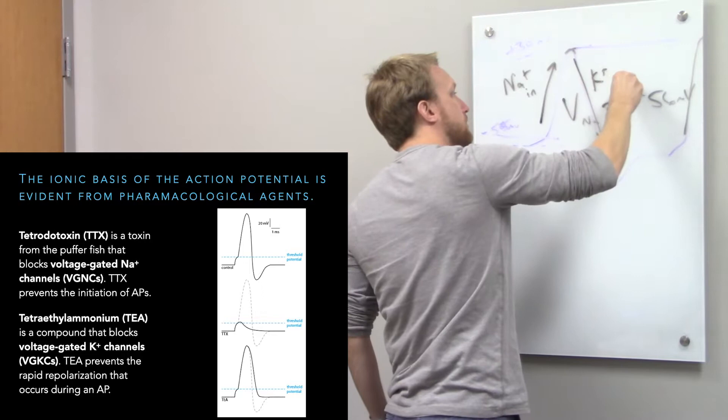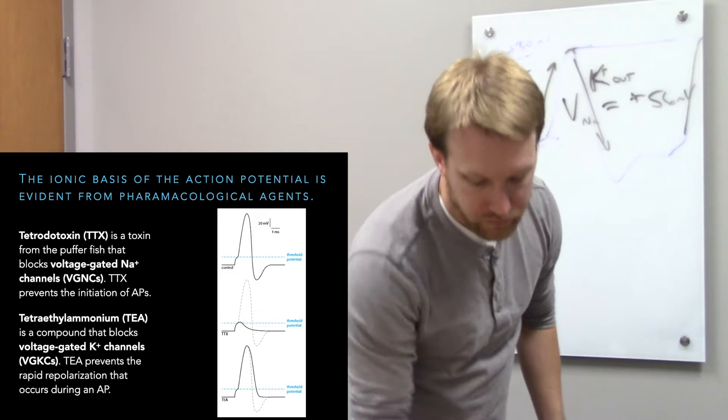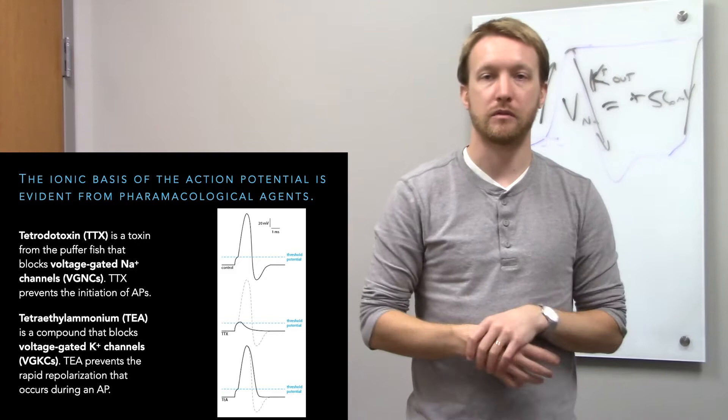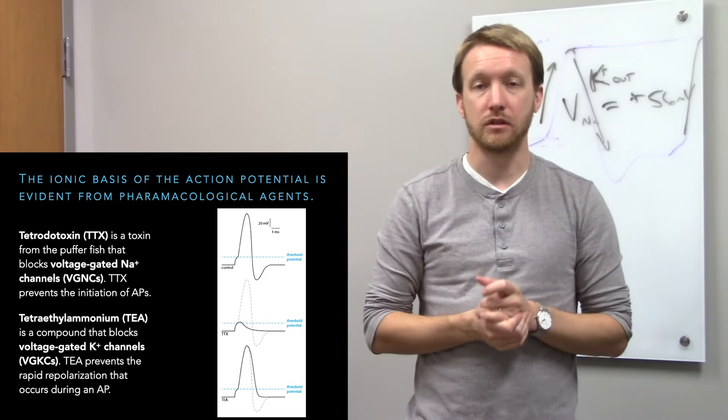Sodium in for depolarization, potassium out for repolarization. We know this from experiments: ion replacement experiments show removing sodium eliminates depolarization. More elegantly, tetrodotoxin — a toxin from pufferfish — blocks voltage-gated sodium channels. Wild pufferfish eating the correct plankton have tetrodotoxin, while farm-raised ones don't.